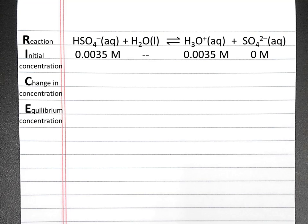Since we don't have any sulfate anions, our reaction will shift to the right. So the change in concentration of hydrogen sulfate will be minus x. The change in concentration of hydronium and sulfate will be plus x. We can calculate the equilibrium concentration of each of our species by adding together the initial concentration and the change in concentration.